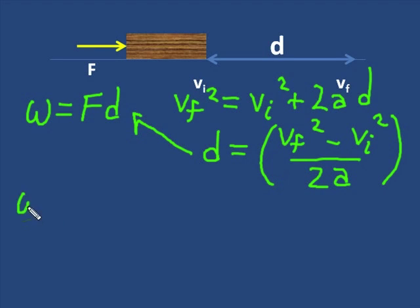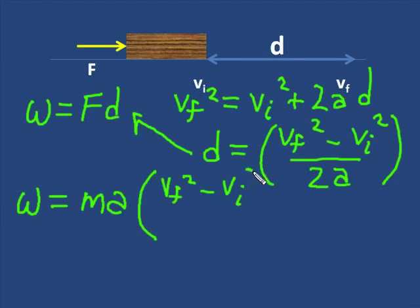Now, you can try this on your own, but watch what happens. Work now is the force is MA times D, which is VF squared minus VI squared over 2A.